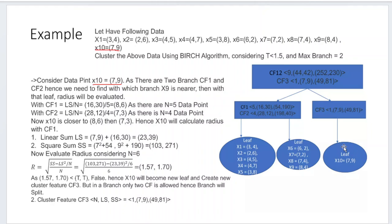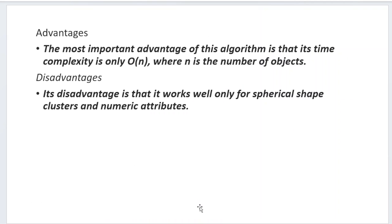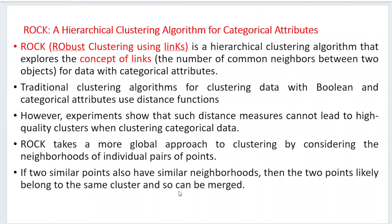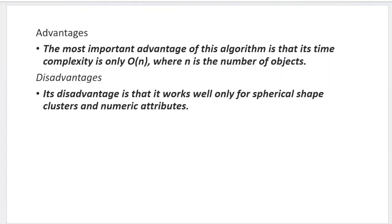When splitting occurs, the maximum number of children for a root node must not exceed b = 2. So the root node has two leaf node children, and additional children can be added based on threshold values. The BIRCH algorithm has a time complexity of O(n), where n is the total number of objects. However, BIRCH does not work well for non-spherical clusters and only supports numerical attributes.